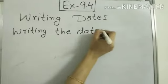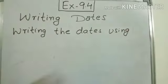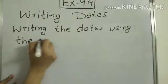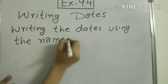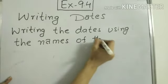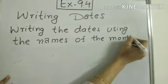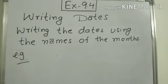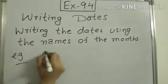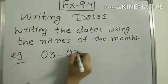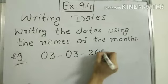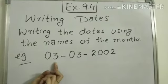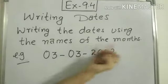So for example, 03-03-2002. This is given, you have to write it by using the months. So it will be, first month will come, that is March.